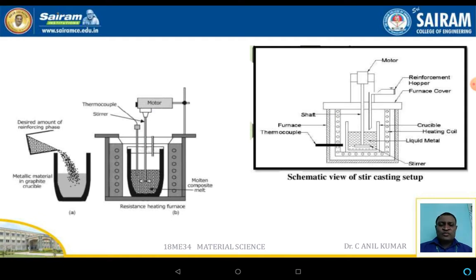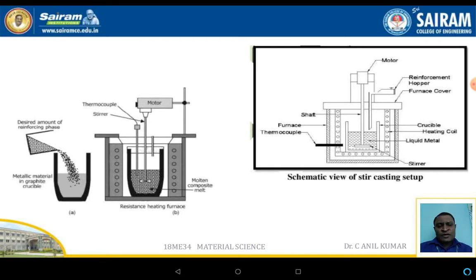The schematic diagram shows the stir casting technique. It consists of the furnace, inside which a crucible is placed. Inside the crucible the metal is melted by the furnace. A reinforcement hopper is fixed to the furnace where the reinforcement is fed. A motor is used to stir and mix the matrix and reinforcement.